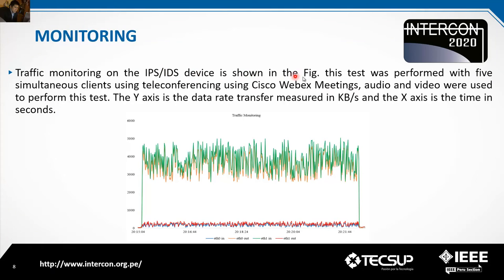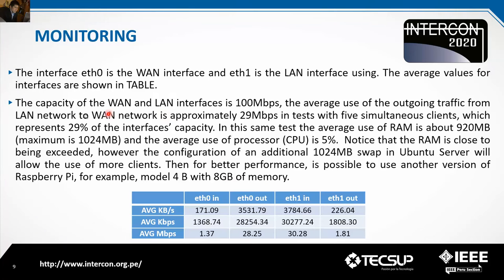Traffic monitoring on the IDS/IPS device is shown in the figure. Ethernet 0 is the WAN interface and Ethernet 1 is the LAN interface. The capacity of both WAN and LAN interfaces is 100 megabits per second.